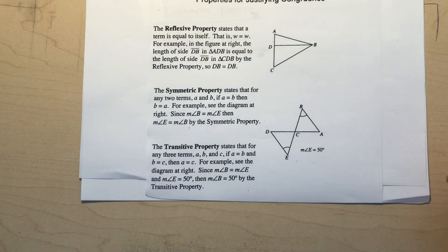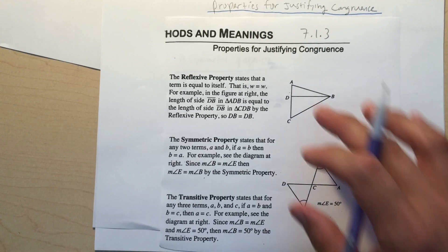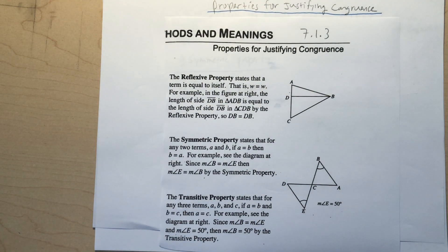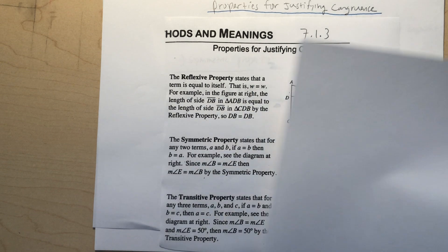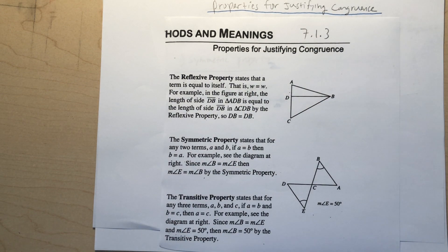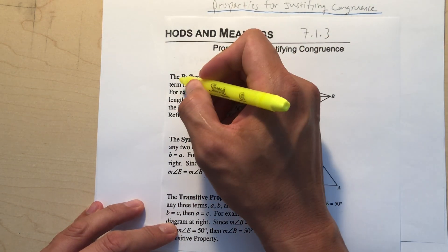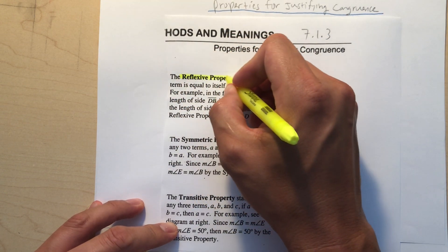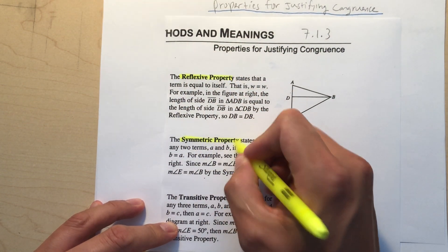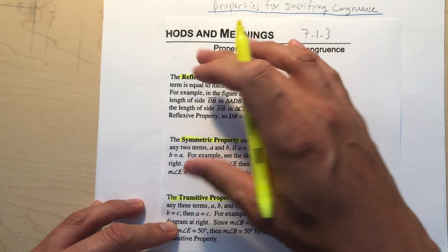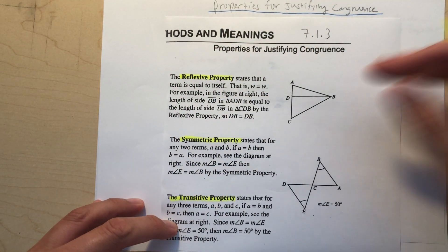Now let's move on to another part of our definitions. It's sort of like being a lawyer — you need laws and rules to prove something. These three properties and definitions will help you later on to prove triangles are congruent.